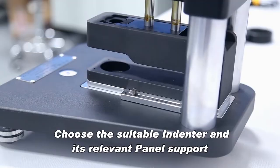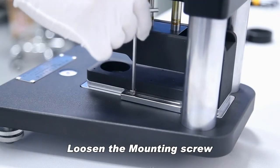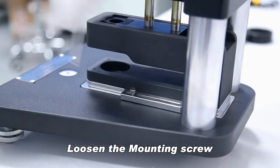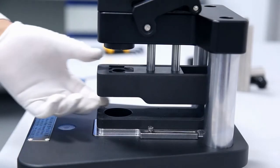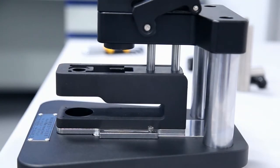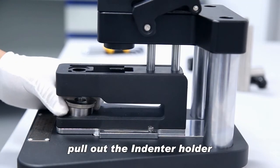Choose the suitable indenter and its relevant panel support. Loosen the mount and screw, then pull out the indenter holder.